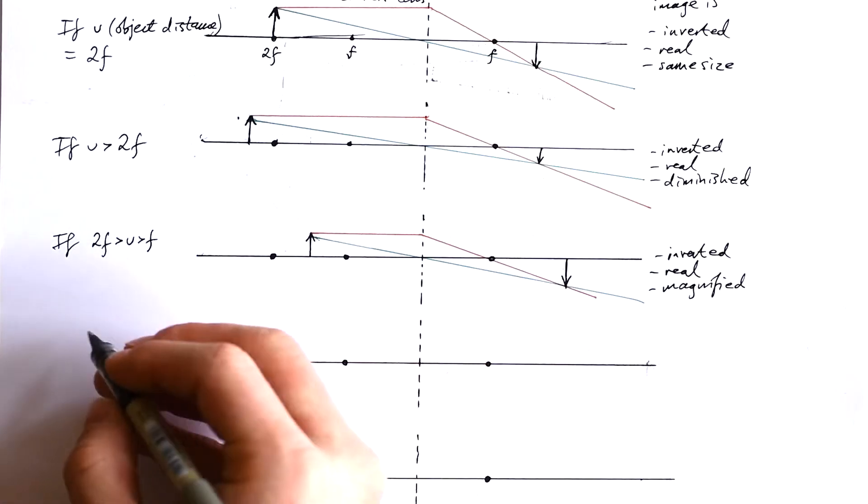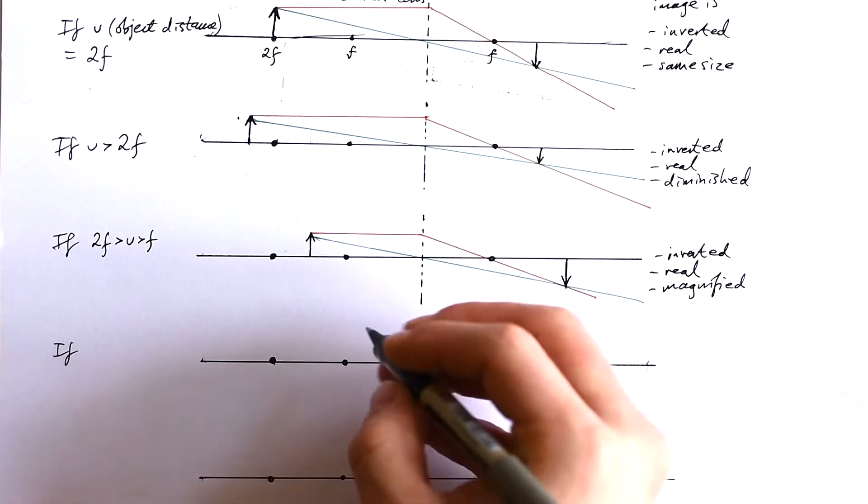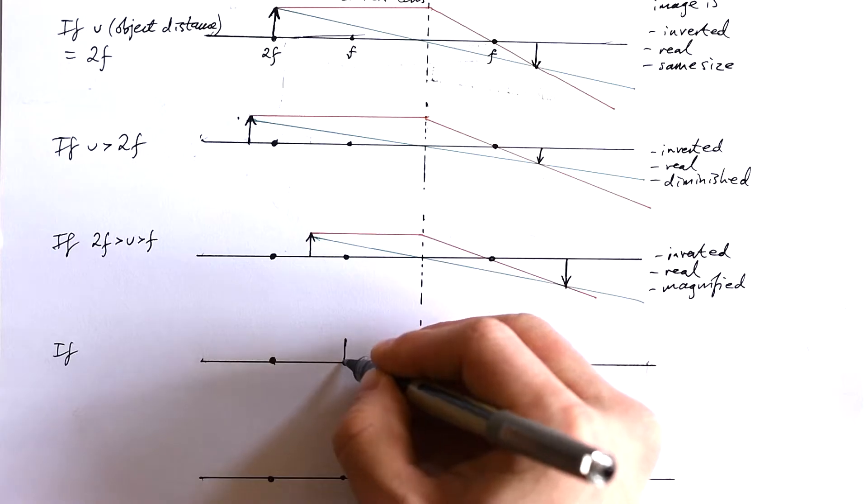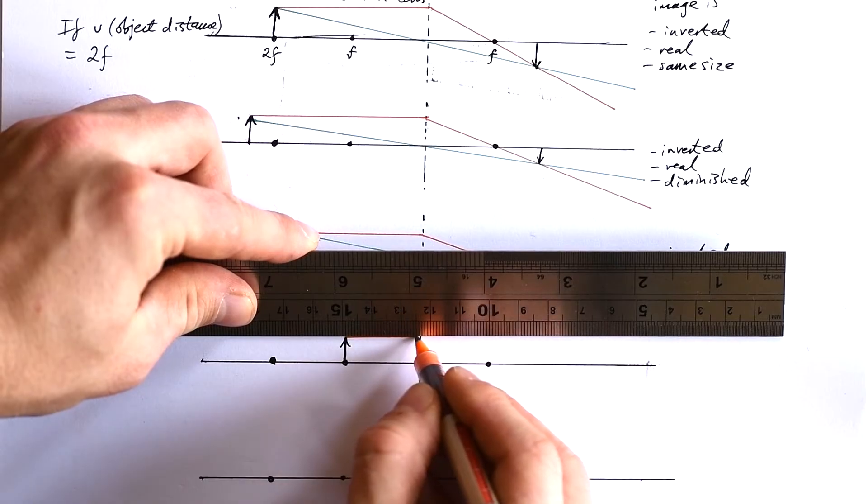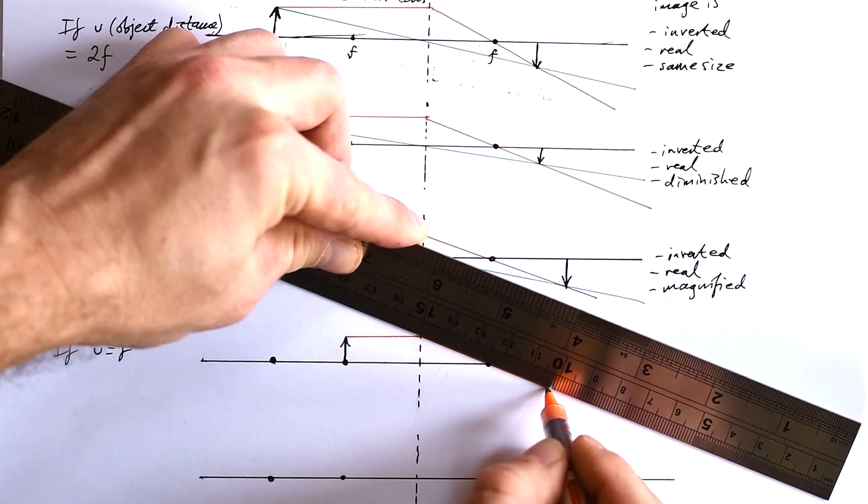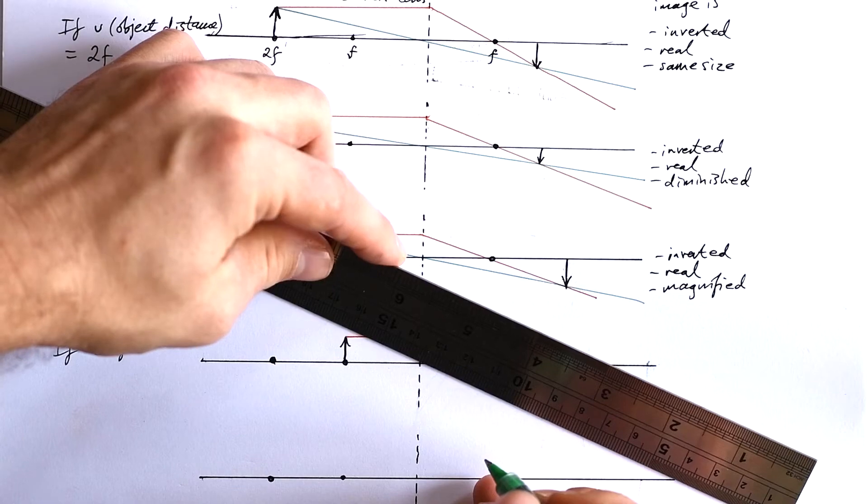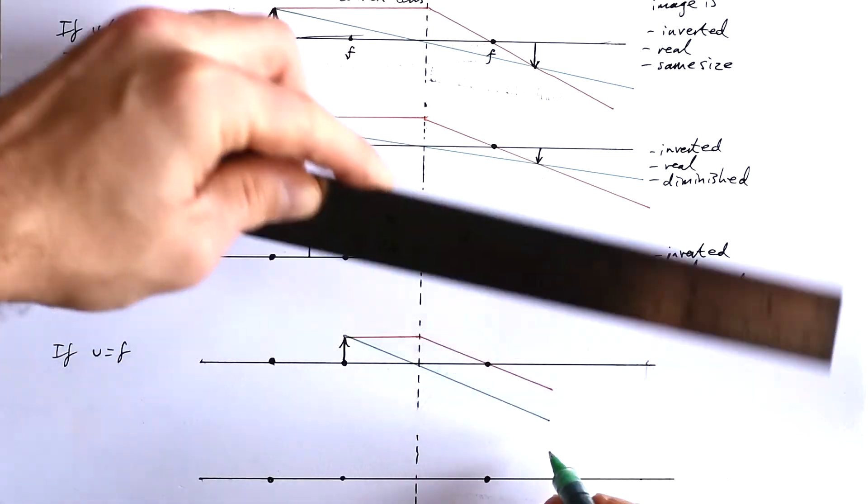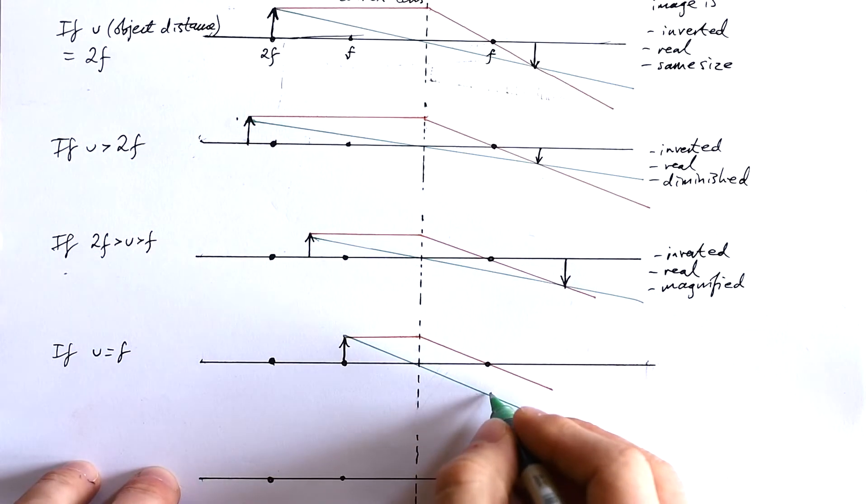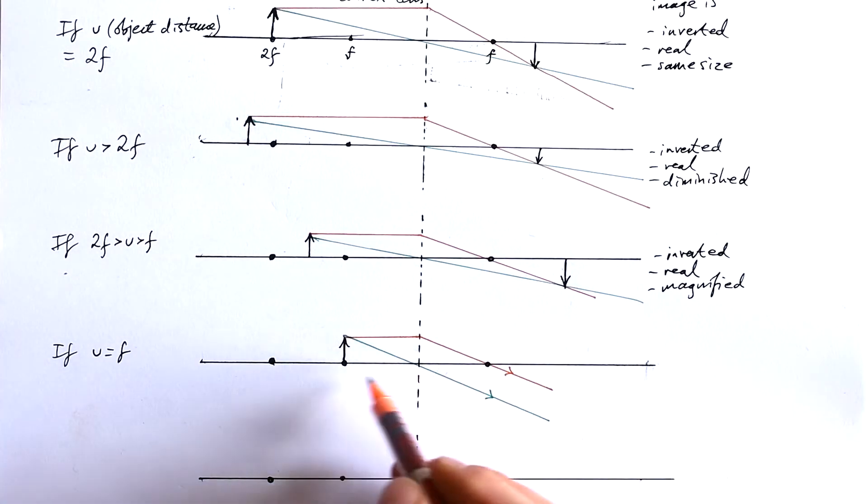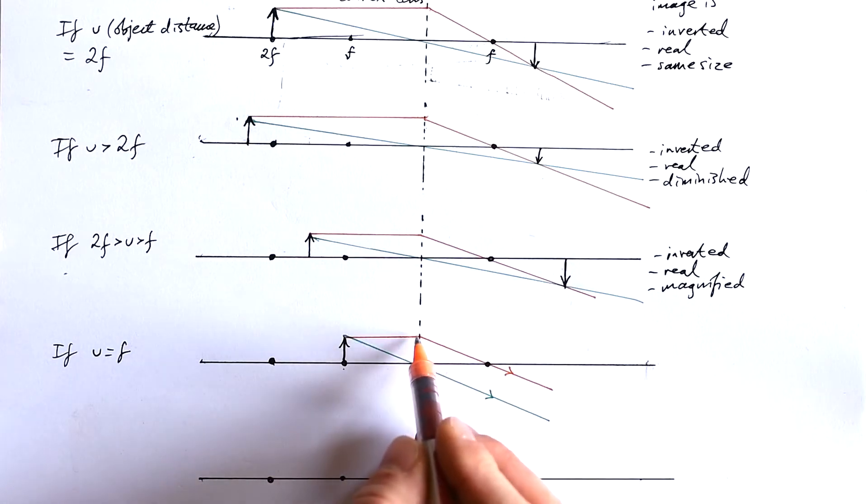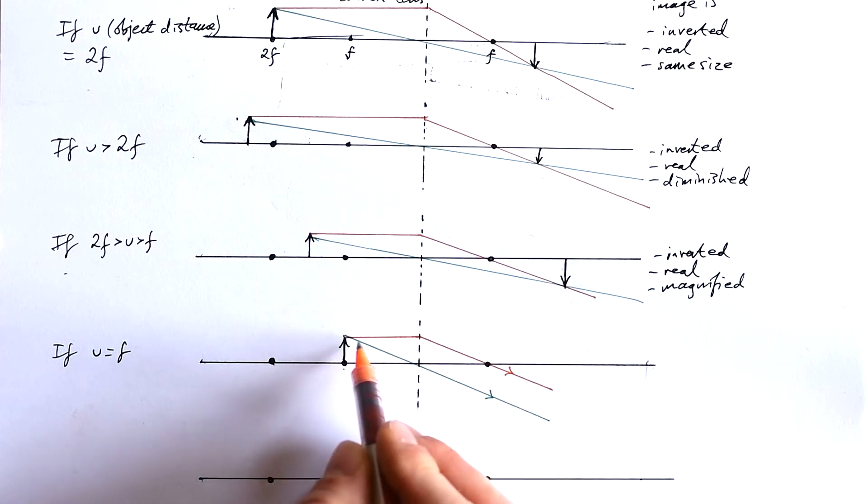This is where things get tricky. What if our object sits on the principal focus point? Let's draw our rays: parallel in and through the focus point. But what happens with this ray here? It doesn't look like our rays are going to meet. That makes sense because if we're at the focal point, and this ray goes in and goes through the focal point, then this one has to be going the same direction coming out of the lens.